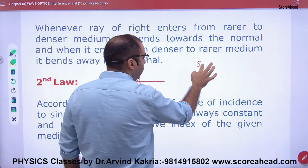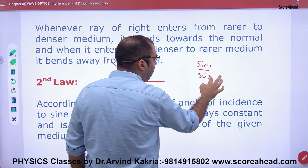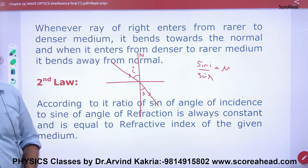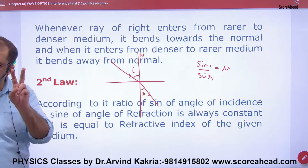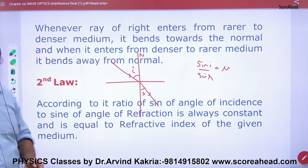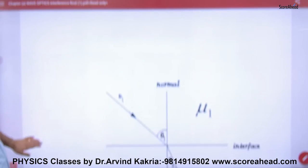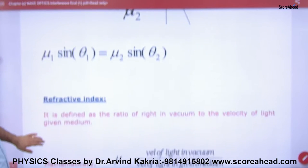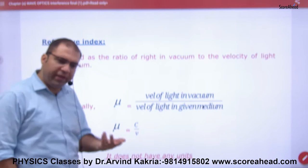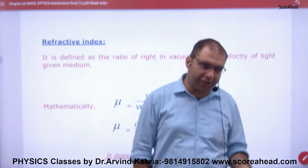If you compute sine of i divided by sine of r, the ratio gives the refractive index. This is the second law of refraction. You should know that there are two laws of refraction. For reflection, the main law is that the angle of incidence is equal to the angle of reflection.